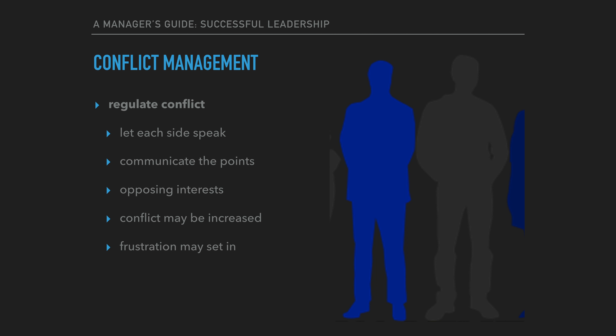Between the followers there can be disagreements, tension, or even conflict. The leader must try to regulate such conflict through diplomacy. To accomplish this, the leader must give each side a chance to speak and voice their opinion. After all the points are made, the leader needs to communicate those points so that each side understands the other's viewpoints.